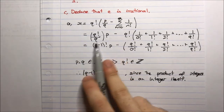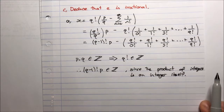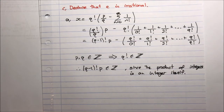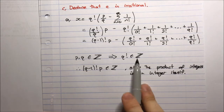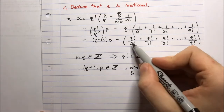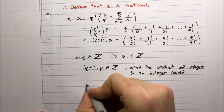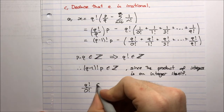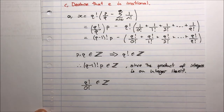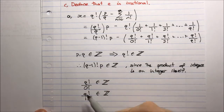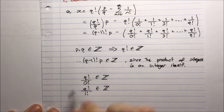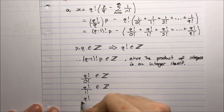Now, what about the terms from distributing q factorial through the summation? We have q factorial on 0 factorial, plus q factorial on 1 factorial, plus q factorial on 2 factorial, and so on up to q factorial on q factorial. Well, 0 factorial is 1, so q factorial divided by 1 is just q factorial, which we already said is an integer. And 1 factorial is also 1, so that term is an integer too.